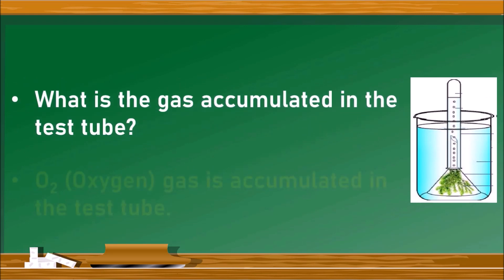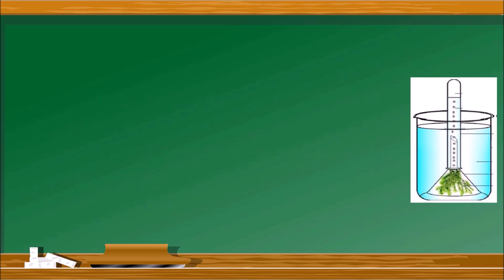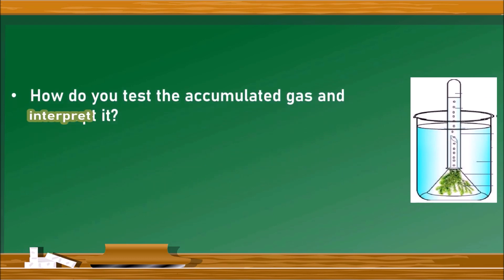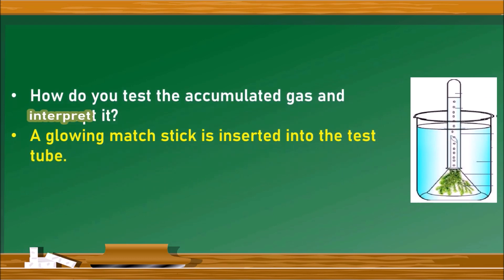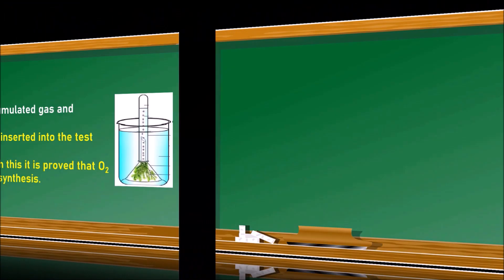The gas accumulated in the test tube is oxygen. To test the accumulated gas: a glowing matchstick is inserted into the test tube — it bursts into flames. This proves that oxygen is released during photosynthesis, because oxygen enhances the flame.